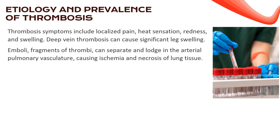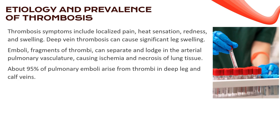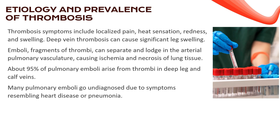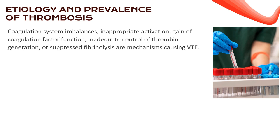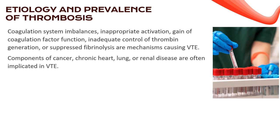Emboli — fragments of thrombi — can travel and lodge in the arterial pulmonary vasculature, leading to ischemia and necrosis of lung tissue. Shockingly, 95% of pulmonary emboli arise from thrombi in deep leg and calf veins. A significant number of cases go undiagnosed due to symptoms resembling heart disease or pneumonia. Mechanisms causing venous thromboembolism (VTE) include coagulation system imbalances, inappropriate activation, gain of coagulation factor function, inadequate control of thrombin generation, or suppressed fibrinolysis. Conditions like cancer, chronic heart, lung, or renal diseases are often implicated in VTE.